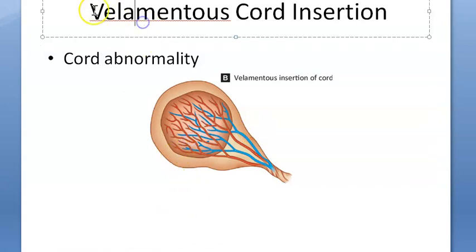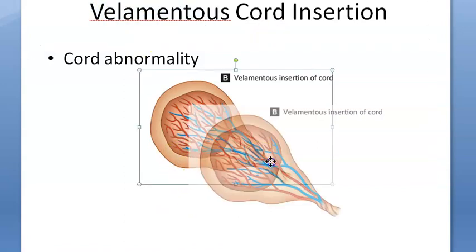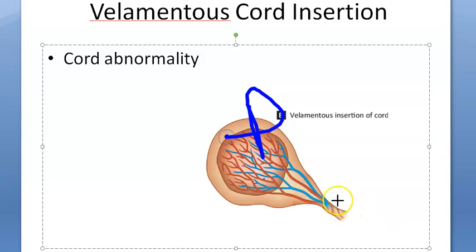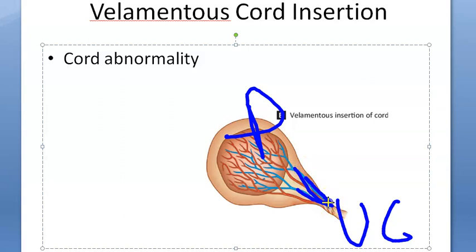In this video we want to look at what velamentous cord insertion means — basically it's a cord abnormality. Here you are looking at the placenta, and here you have the umbilical cord. From the fetus you are getting fetal blood vessels — both arteries and veins are shown here.